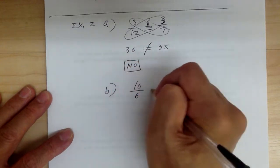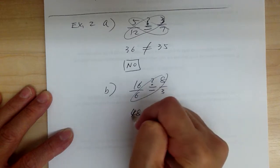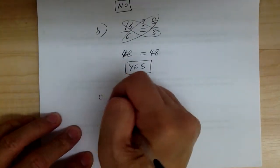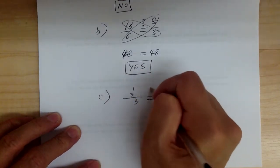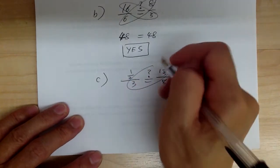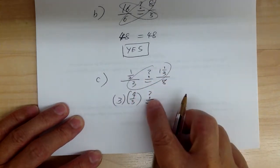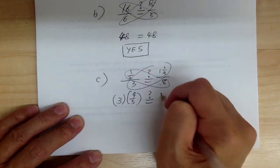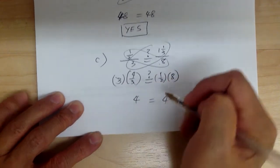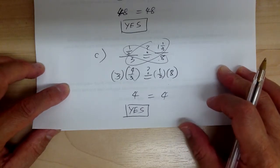For part B: 16 over 6 equals 8 over 3. Cross multiplying gives 48 and 48 — so yes, that is a proportion. For part C: 1/2 over 3 — does it equal 1 and 1/3 over 8? Convert 1 and 1/3 to the improper fraction 4/3. Cross multiplying, you get 4 on both sides — they are equal. So the answer is yes, it is a proportion. If cross products are equal, it's a proportion; if not, it isn't.